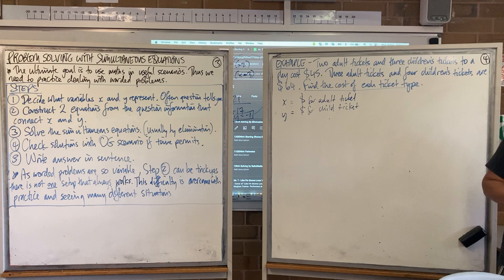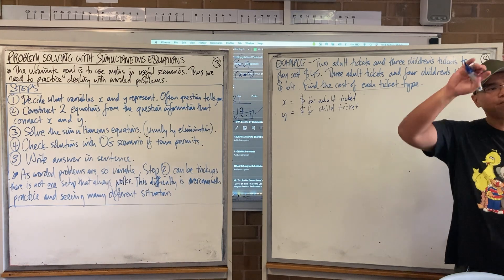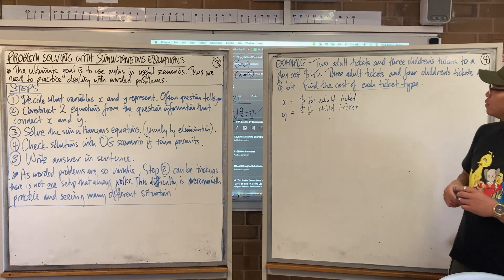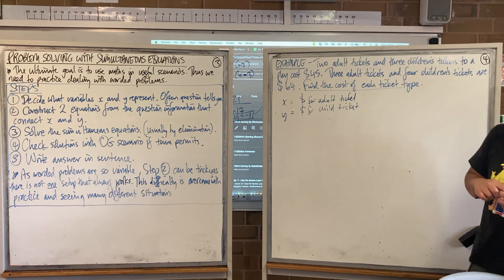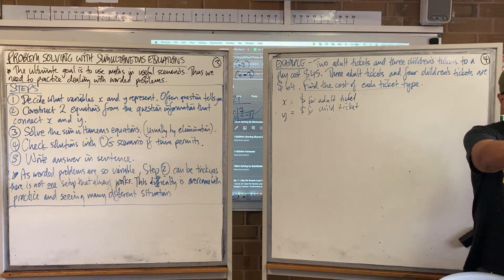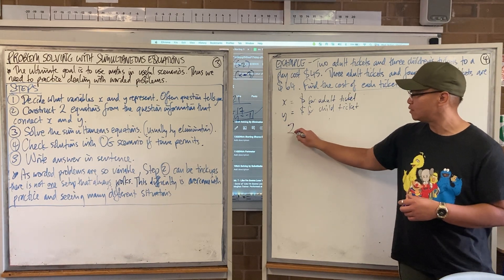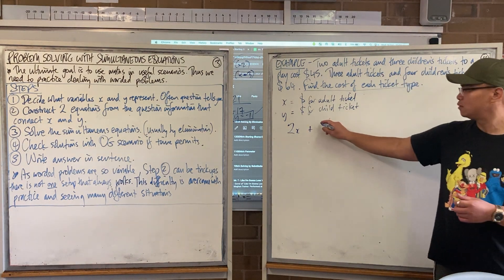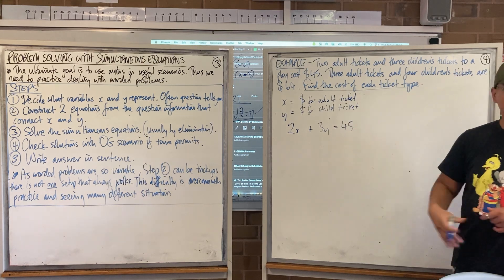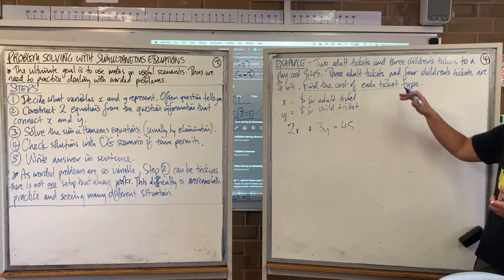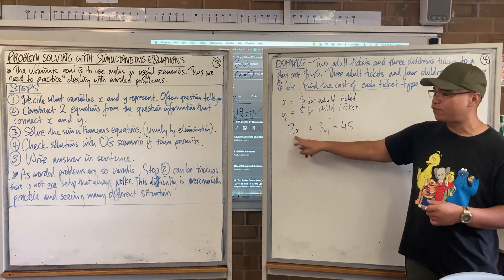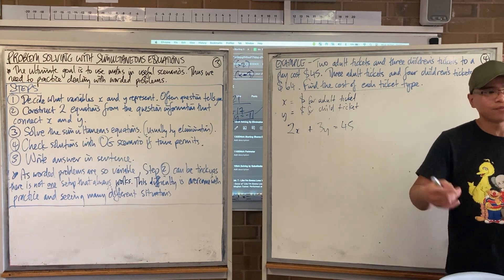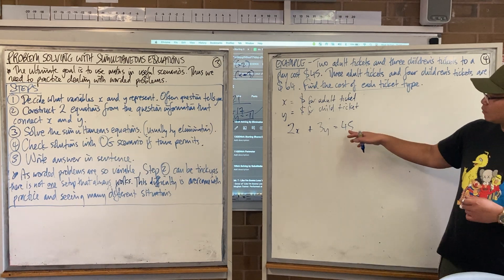This is the tricky part, setting up the equations. Do we have two different ticket buying situations? Yes. Two adult tickets and three children's tickets cost 45 dollars. 2x plus, can you finish off the equation for scenario one? 3y equals 45. Why is that representative of this? Because let's say adult tickets were five dollars each. What's the cost of two adult tickets going to be? Two times by five. Okay? That's the first equation.